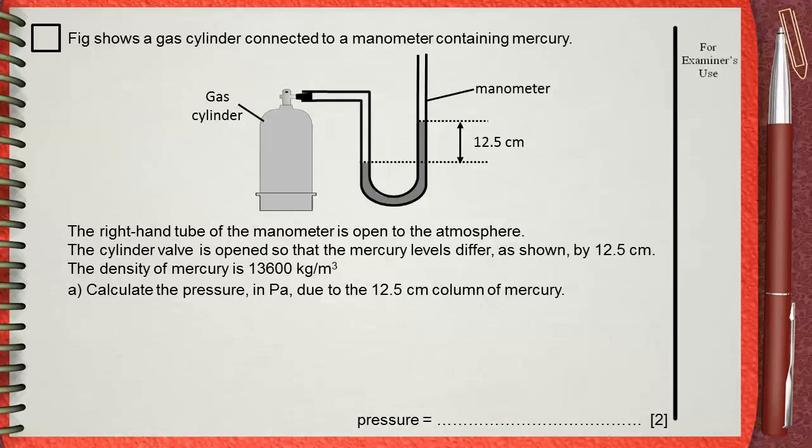Part a: Calculate the pressure in Pascals due to the 12.5 centimeters column of mercury.